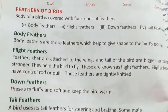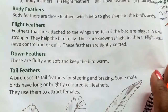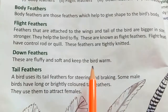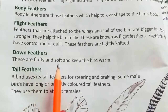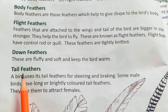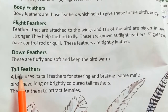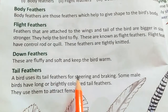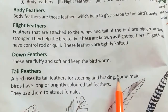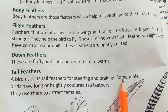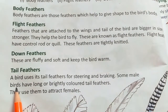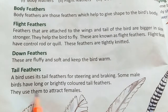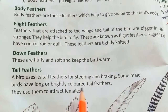Down feathers are fluffy and soft and keep the bird's body warm. They are found throughout the bird's body and are very soft. The last type is tail feathers. A bird uses its tail feathers for steering and balance. Some male birds have long and brightly colored tail feathers, which they use to attract females.